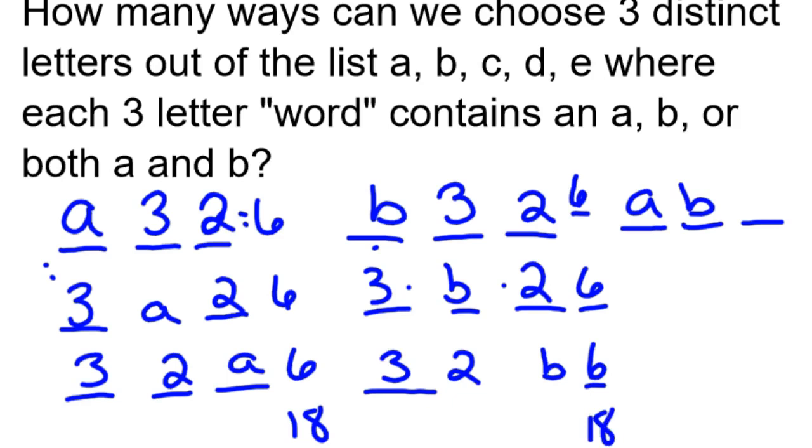The final one is you could have an a and a b, and that leaves you three letters left over for that final position. So this could be a, b, e or a, b, d or a, b, c, so there's your three choices.